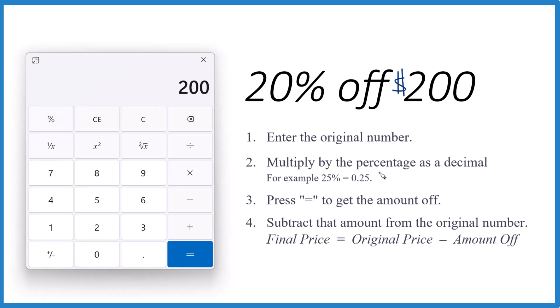Then we're going to multiply by the percentage, the 20%, but we need it to be a decimal. So we're going to call it 0.20, or just 0.2. So we multiply by 0.2.